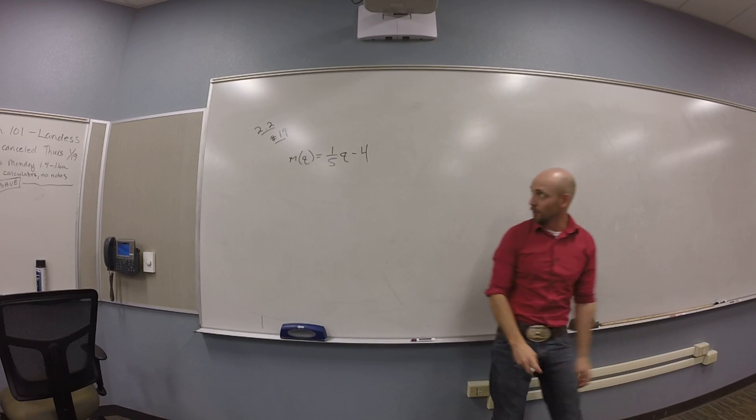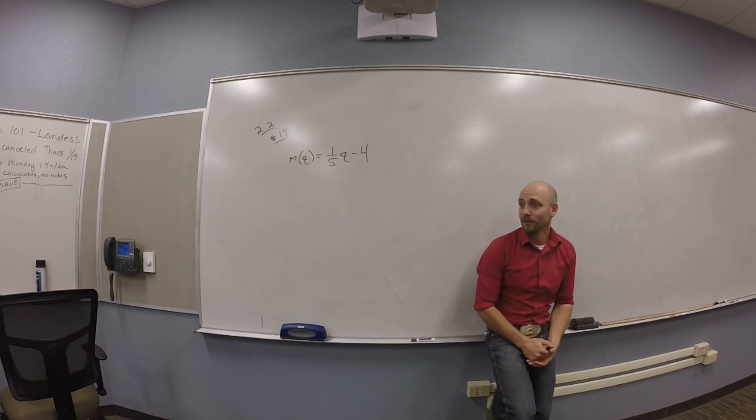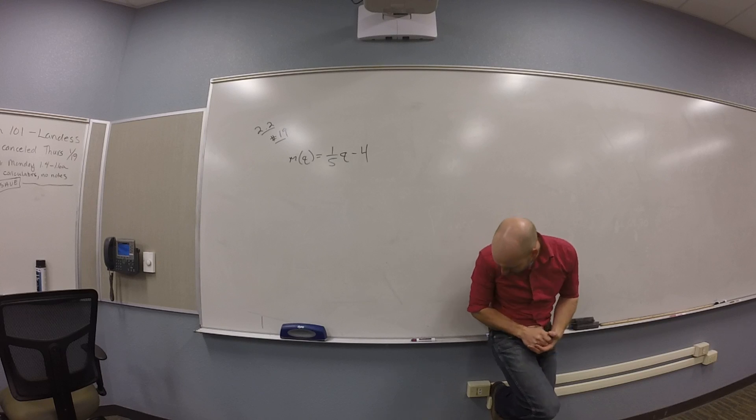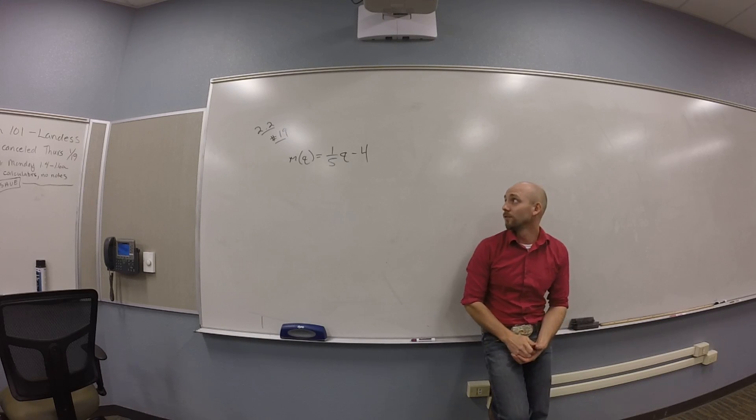All right. So let's suppose we had number 19 out of 2.2, which asks us to algebraically find the domain and range for the function m of q is 1/5 q minus 4.